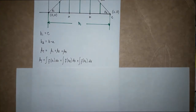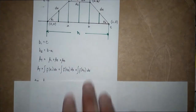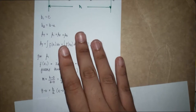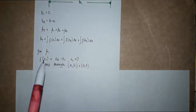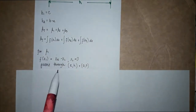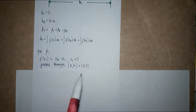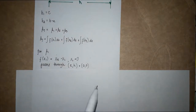The total area can be translated as the integral of f(x1) dx plus the integral of f(x2) dx plus the integral of f(x3) dx. For A1, f(x1) is equal to x upper minus x lower, wherein x lower is equal to zero.